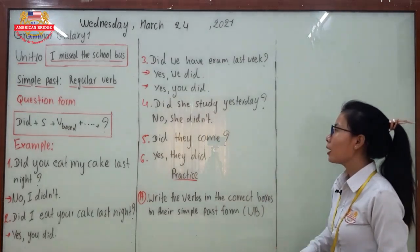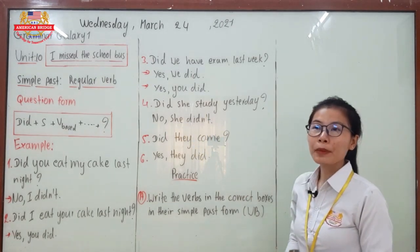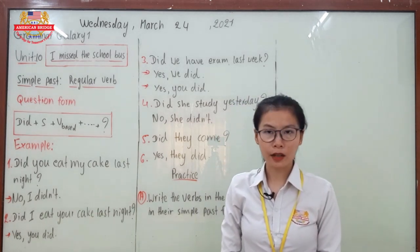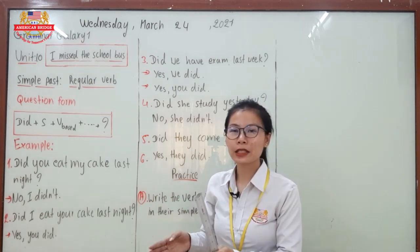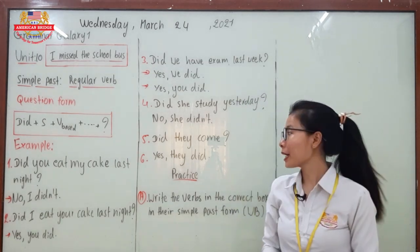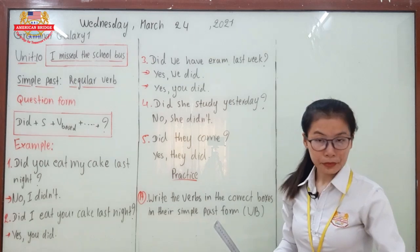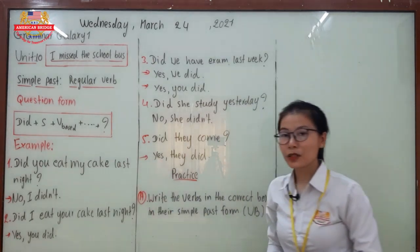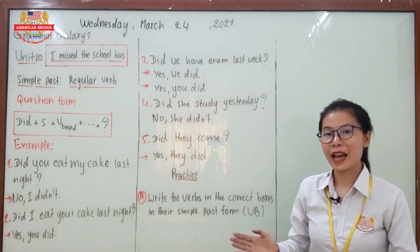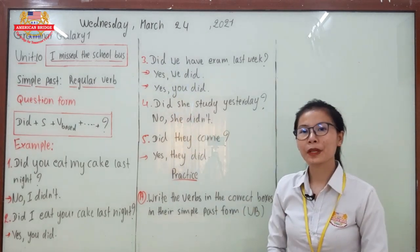Number four: 'Did she study yesterday?' Answer: 'No, she didn't.' For yes/no questions with third person singular or plural, we do not change the subject in the answer. If the question starts with 'she,' the answer uses 'she.' If it starts with 'it,' use 'it.' For number five, 'Did they come?' — 'Yes, they did.' Only with first person and second person do we sometimes change the subject.